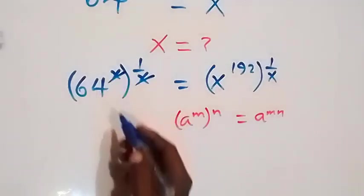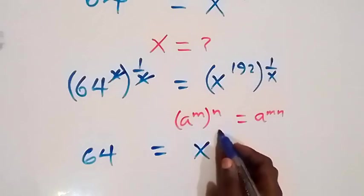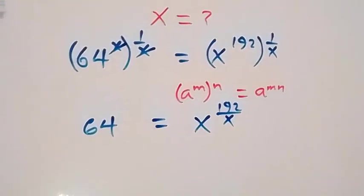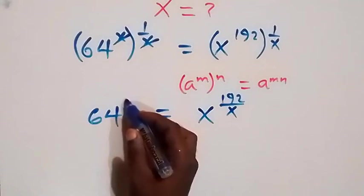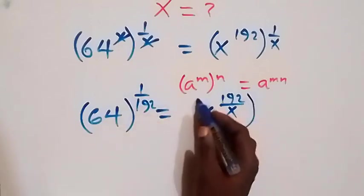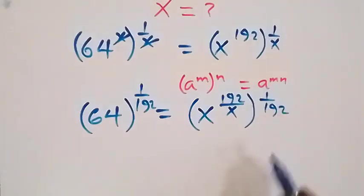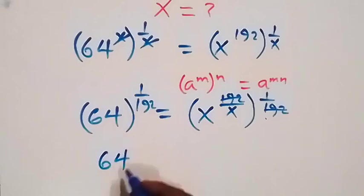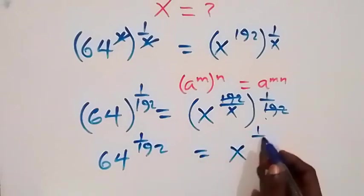From the law of indices, the powers multiply, so x cancels x and we have 64. Now equals to x raised to power 192 over x. Next step, let's raise both sides to power 1 over 92 as well, multiplying the exponent by 1 over 92. This gives us 64 raised to power 1 over 92 equals to x raised to power 1 over x.